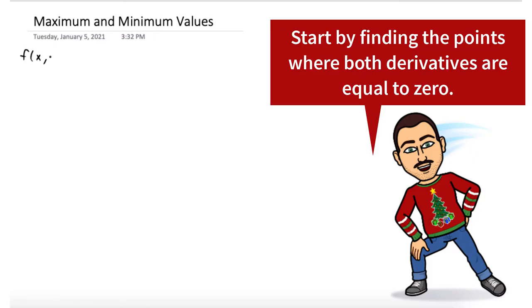So we want to find the local maximum and minimum values and the saddle points of the function 2x³ + xy² + 5x² + y². And the way we're going to do that is with the second derivative test. So we have to first find the partial with respect to x of the function, and we're going to set it equal to zero. To find that, we just treat y as a constant. So it works out to be 6x² + y² + 10x.